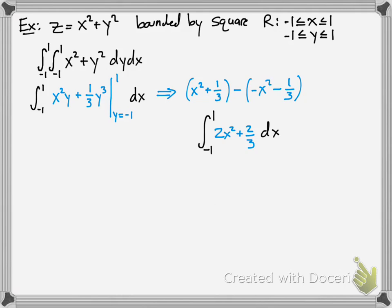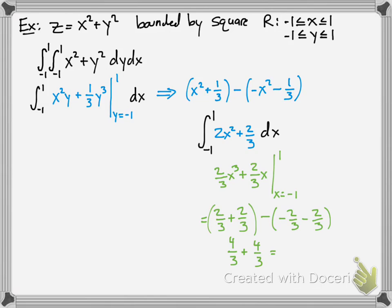So now we do the same thing and integrate with respect to x now. Same thing, fundamental theorem of calculus. You should get these values when you anti-differentiate. Basic integration here. And then you evaluate it at those points. And you should do the fundamental theorem of calculus once again. Simplify, and you get your answer as 8 thirds.